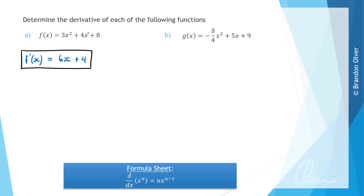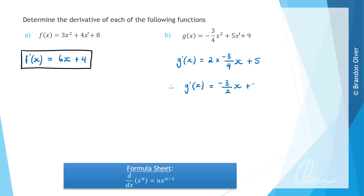For part B, g(x) equals negative 3 over 4 times x squared plus 5x plus 9. The derivative g'(x) is going to equal: we take the power out the front, so 2 times negative 3 over 4 gives us the first term, with 1 subtracted from the power. Then plus 5x differentiates to positive 5. Differentiating 9 gives plus 0. Finalising, g'(x) equals negative 6 over 4, which simplifies to minus 3 over 2 times x, plus 5. That is the answer for part B.